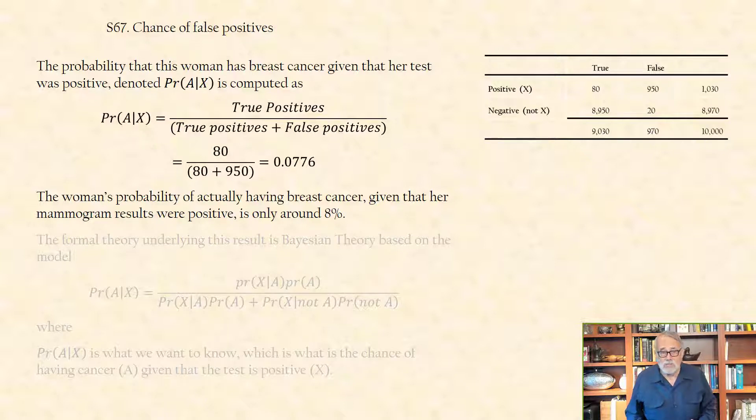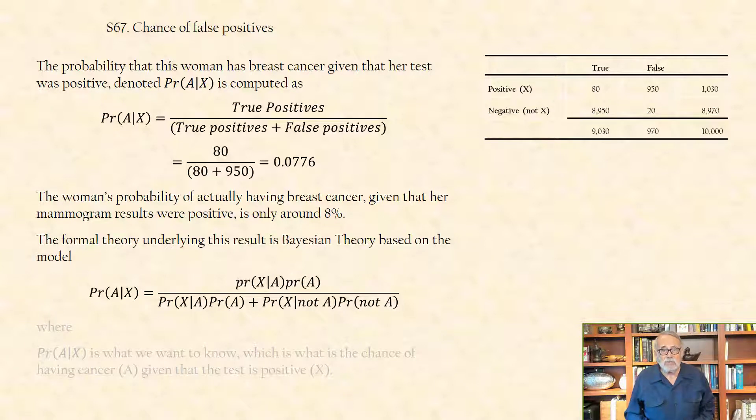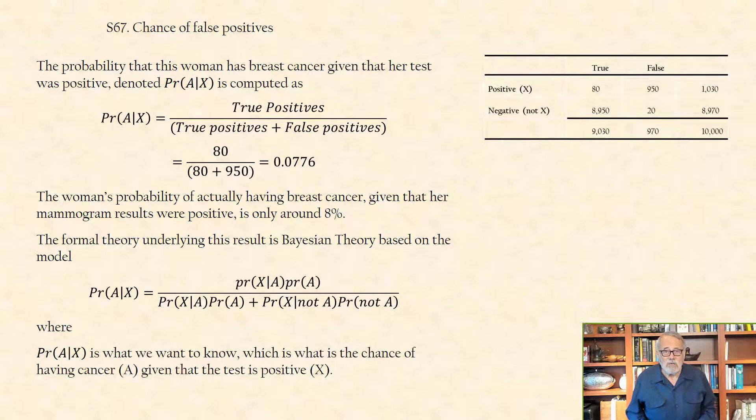The formal theory underlying this result is Bayesian theory, based on the model given here, where Pr(A|X) is what we want to know, which is what is the chance of having cancer A, given that the test is positive X.